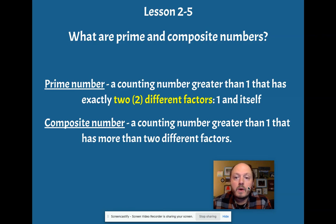So, what are prime and composite numbers? Prime number is a counting number greater than 1 that has exactly, exactly 2 different factors. 1 and the number itself, okay?